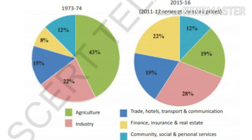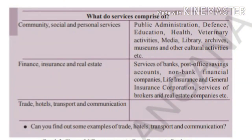The pie graphs represent the GDP in the given year. Services comprise three types. The first category is community, social, and personal services — covering public administration, defense, education, health, media, and libraries. The second is finance, insurance, and real estate — covering banks, post offices, savings accounts, non-bank financial companies, and life and general insurance corporations. The third is trade, hotels, transport, and communication.